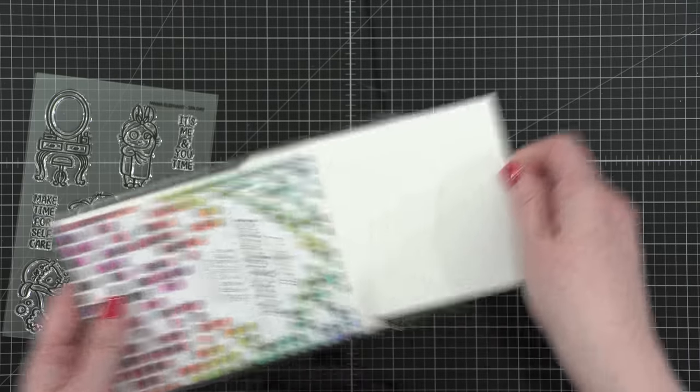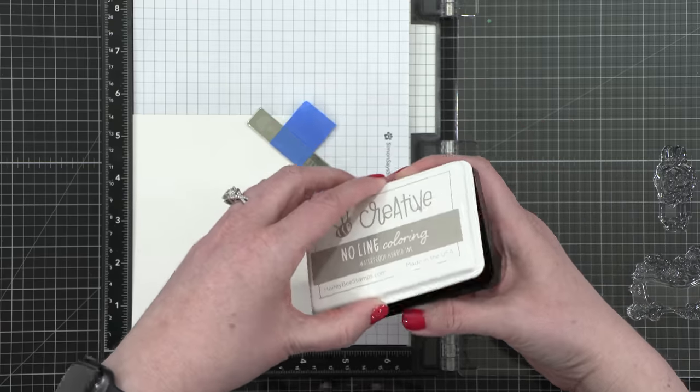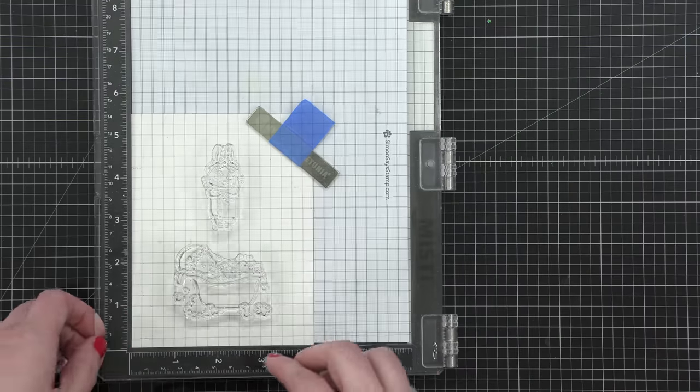So I'm using some watercolor paper from Altenew. This is just for the no-line watercoloring of the images. Then I'll switch to some different watercolor paper for the backgrounds.